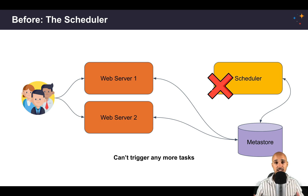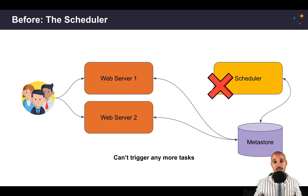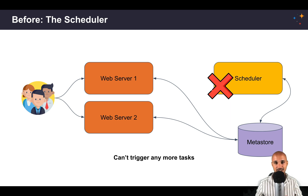Even your teams or your customers won't be able to get their data in time. In order to fix this big issue, in Airflow 2.0 you are able to run multiple schedulers at the same time, which means the scheduler is highly available.